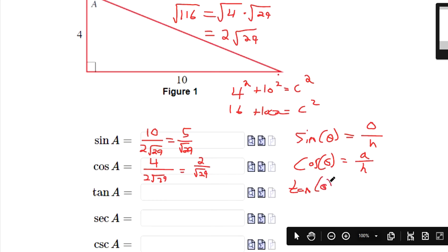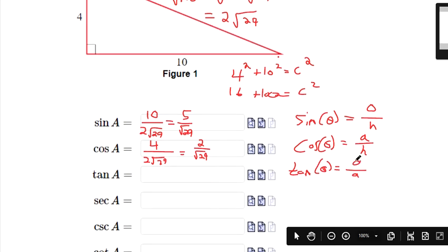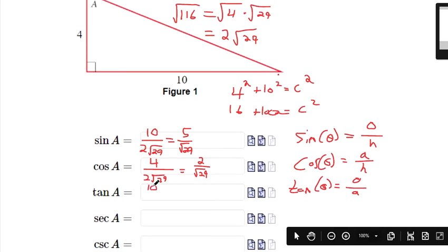Tangent of theta is the opposite over the adjacent. So the opposite side is 10. The adjacent side is 4. So if you simplify that fraction, it's 5 over 2.